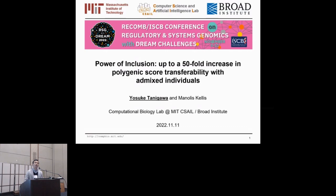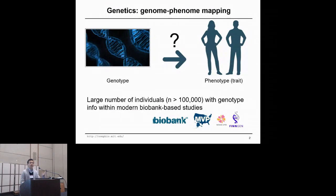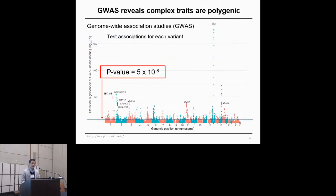We like to consider human genetics, which is basically the mapping problem between the genetic variation in your human genome and the phenotypic variation we observe in the population. This is a good time to study human genetics because large numbers of individuals with rich genetic information are readily available in many different cohorts. It is not uncommon to see more than 100,000 individuals with genotype data in UK Biobank, Million Veterans Program, BioBank Japan, FinnGen, and other emerging biobanks across the globe.